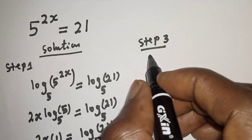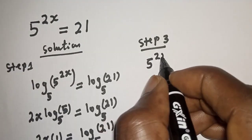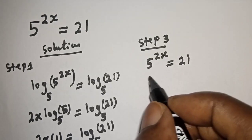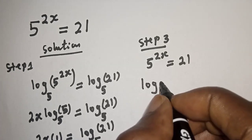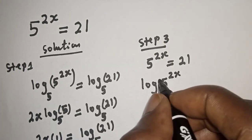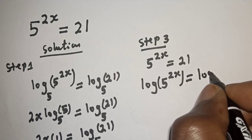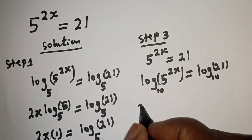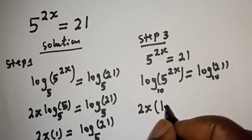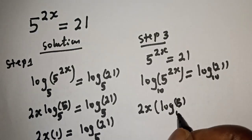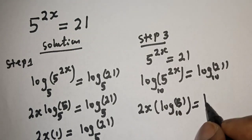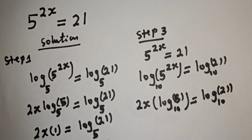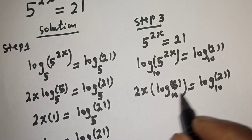Now let's consider the third method. With the third method we have the given equation: 5 raised to power 2x is equal to 21. Let's take the log of both sides with base 10: log of 5 raised to power 2x is equal to log 21 base 10. Bringing down the exponent: 2x times log 5 base 10 is equal to log 21 base 10.